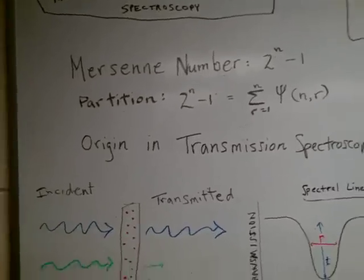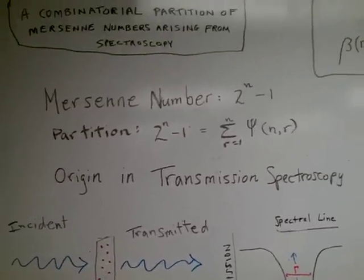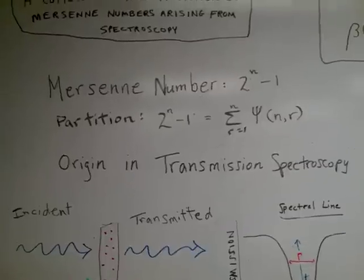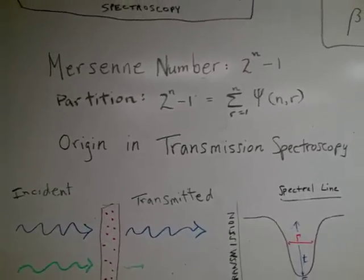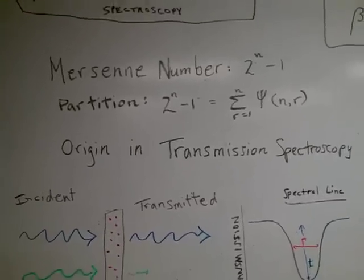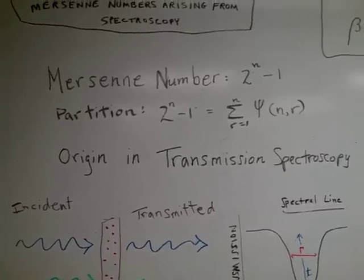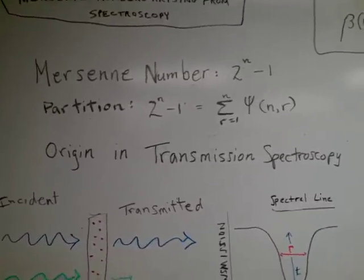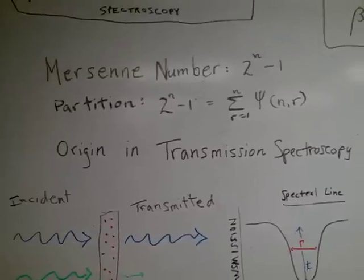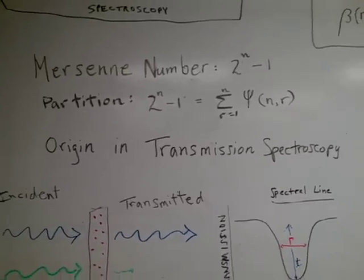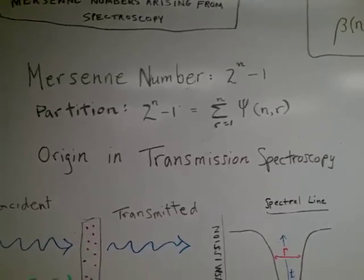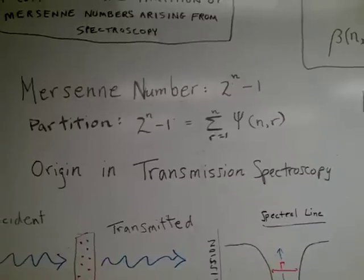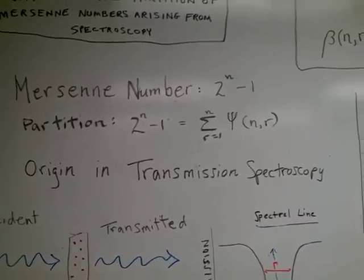In this paper, I show that Mersenne numbers of the form 2^n - 1, a generic variant of Mersenne primes that are very prominent in number theory, can be partitioned as a combinatorial sum of a function that has as its arguments both the exponent and the summing index.